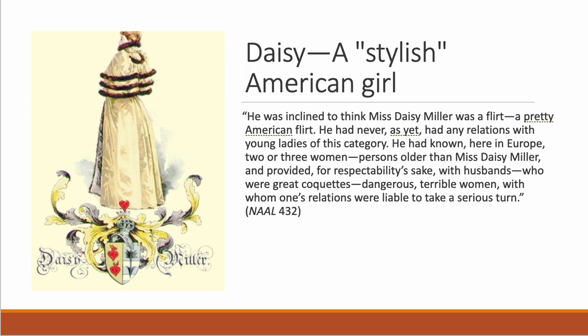Another issue we see in Daisy Miller is that Daisy is a stylish American girl. An illustration by Harry McVicker appeared as a frontispiece to the 1892 Harper and Brothers edition of Daisy Miller. As you read, think about how Daisy's sexuality is presented from the outset — is it dangerous, silly, or capricious? What do the terms 'flirt' and 'coquette' mean? Winterborn calls her both. Winterborn has been in Europe so long that he's not really aware of American culture anymore, while Daisy is part of the nouveau riche who doesn't understand upper-class culture. You have a story where these two kinds of misunderstandings are happening simultaneously.